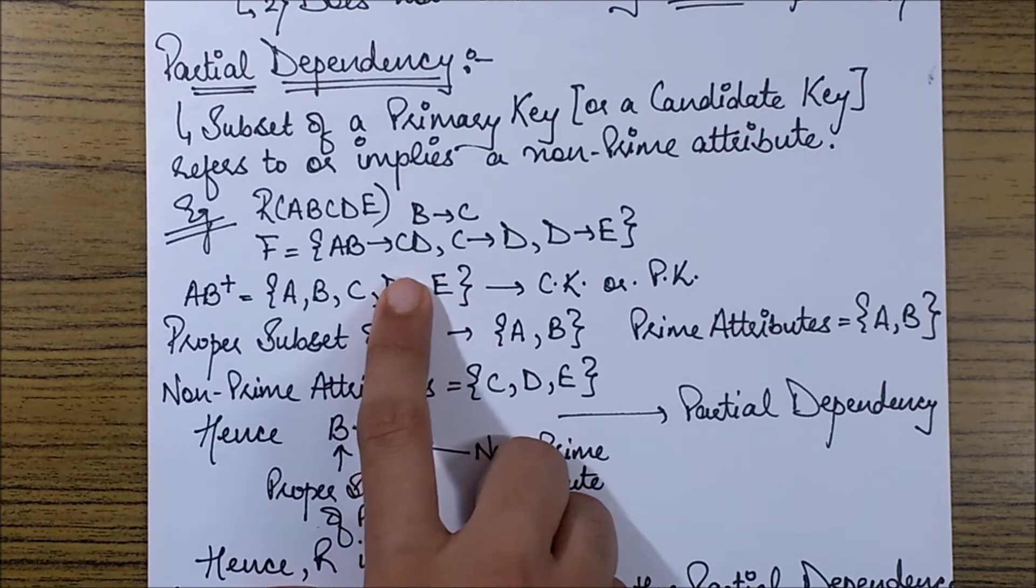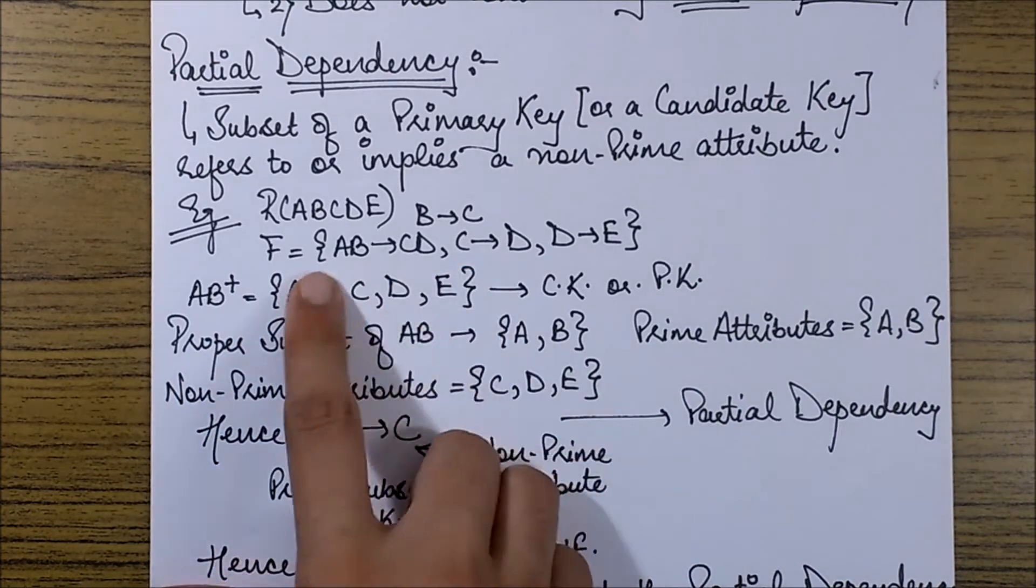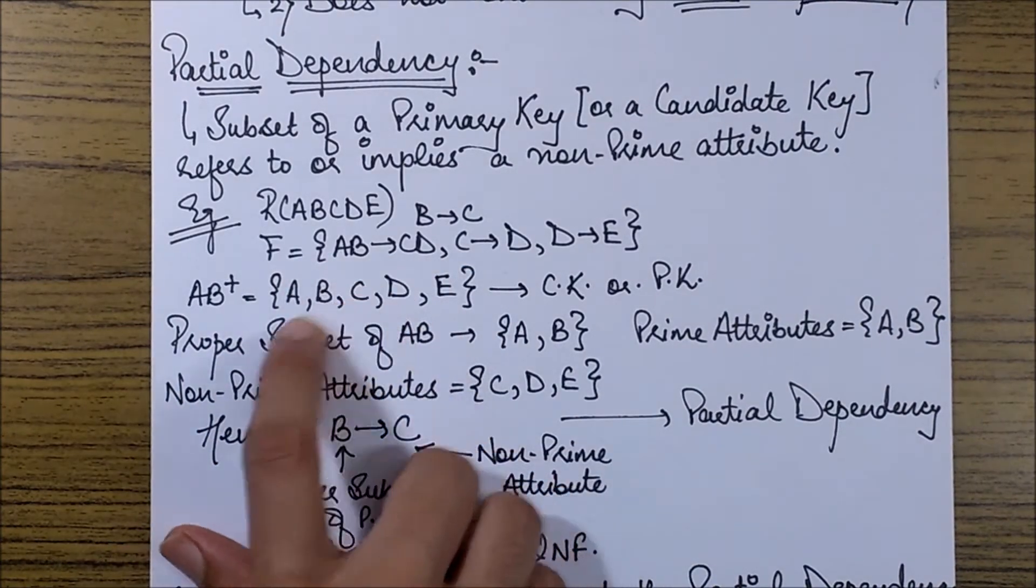So we just need to find the primary key. You already know how to find a primary key. We have already seen that with the help of the first video of this session. In case you have not seen please view that previous video. So we start with finding the closure and I can see that finding the A, B closure would serve the purpose.